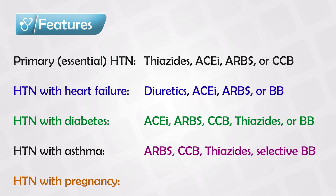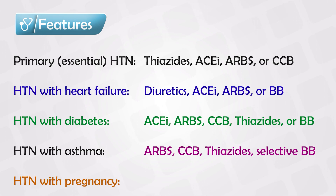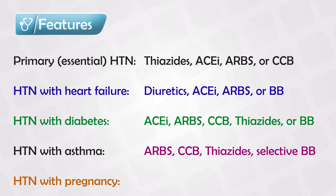If the patient has hypertension with asthma, we can use ARBs but not ACE inhibitors, because asthmatic patients can have cough and ACE inhibitors also cause cough, making it difficult to identify the cause. We can also use calcium channel blockers, thiazide diuretics, and sometimes cardioselective beta blockers — non-selective beta blockers are avoided because they can cause bronchospasm.